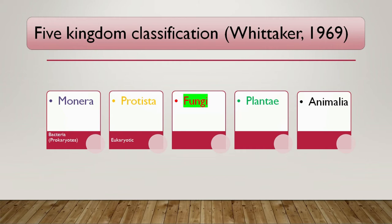They were called achlorophyllous plants. Now in the five kingdom classification, fungi have been treated differently. Because they are achlorophyllous, they are multicellular — some are single-celled of course, like yeast. They have absorptive type of nutrition, they produce spores, and they reproduce sexually and asexually. So fungi were separated from all other organisms.